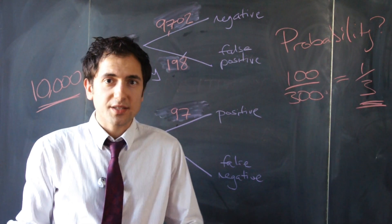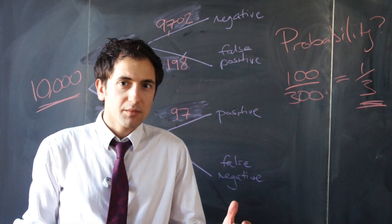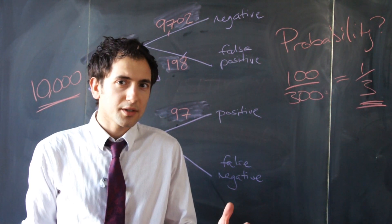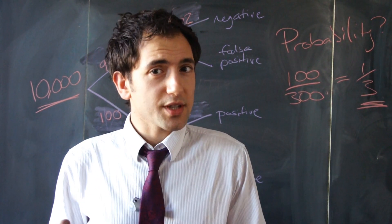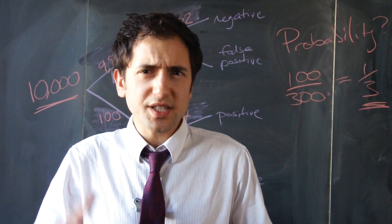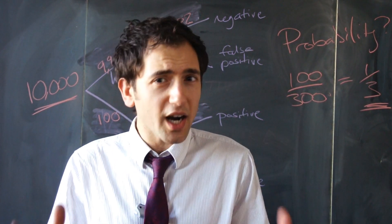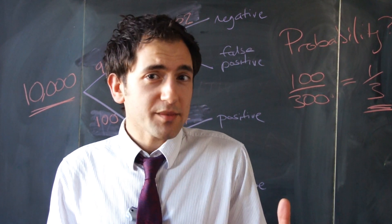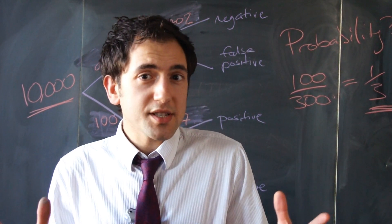So you've taken the test, the result is positive, but the chance that you have the disease is only one third. The test looks accurate when we first see the figures—97%, 98%, these are high numbers. But in reality, if you take the test and it comes up positive, the chance of having the disease is only one third.